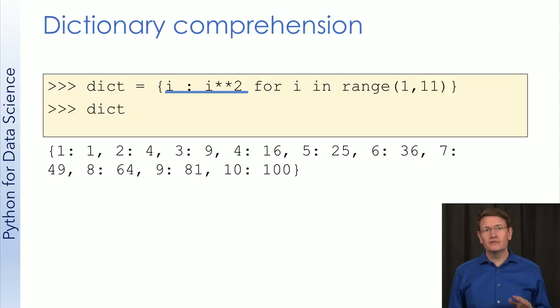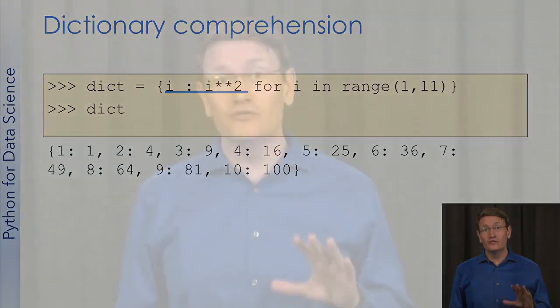I recommend you play with this a bit yourself. For example, could you build a dictionary of letters from capital A to capital Z as values, and their corresponding numeric ASCII values as the key? You might find the chr function useful. Okay, pause the video, take a minute, and try to do this yourself. Then resume the video, I'll show you the answer.